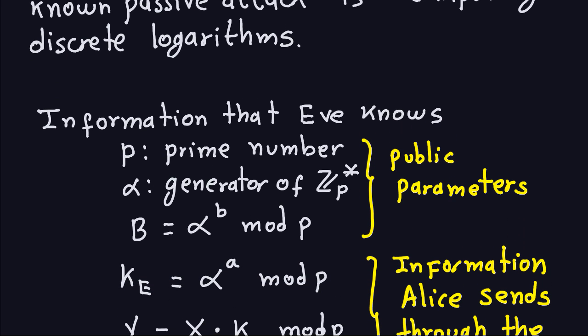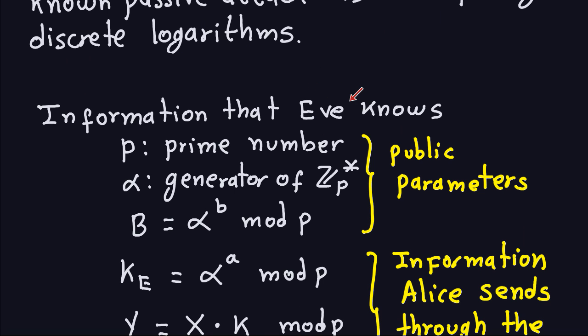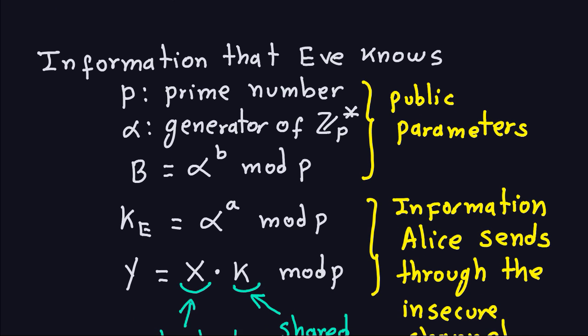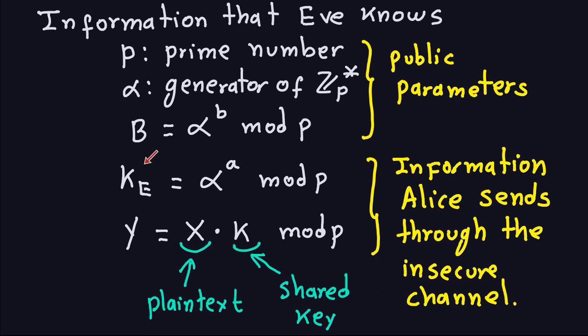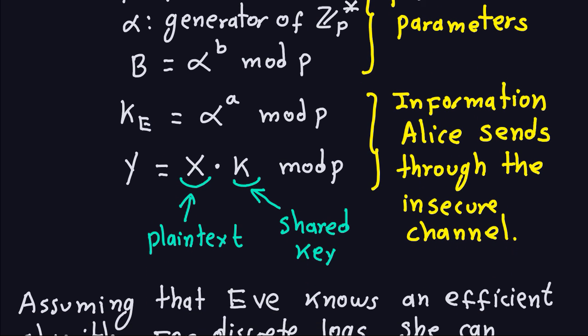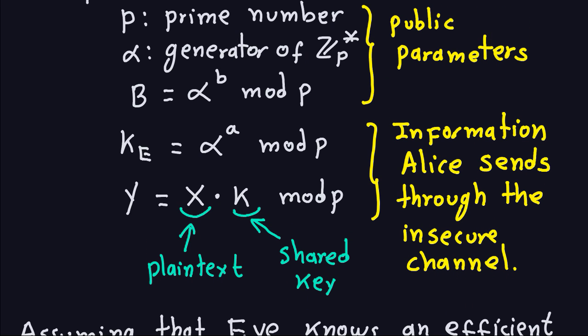Let's see what information Eve has. Eve knows P, alpha, and B, which are all public parameters. Because she is listening through the channel, she also knows the ephemeral key K_e and the ciphertext Y sent by Alice. So she knows five numbers in total. She does not know Bob's private exponent b (small b), Alice's exponent a (small a), the shared key K, or the plaintext X.